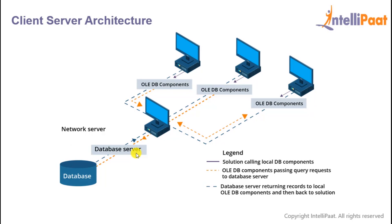Now let's look at client server architecture. We can see that there are three OLEDB components, or in other words they are just client systems or user systems. We have shown three here, but there can actually be n number of systems accessing the database at the same time.